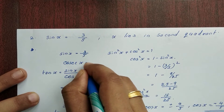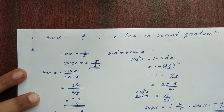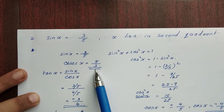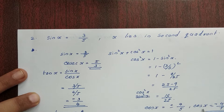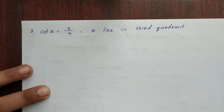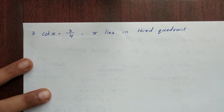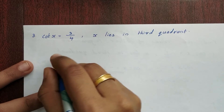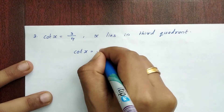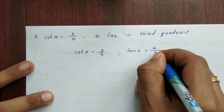In the second quadrant, sin is equal to 3 by 4, and x lies in the third quadrant. In the third quadrant, sin is negative. So cos x equals 3 by 4 and tan x equals 4 by 3.